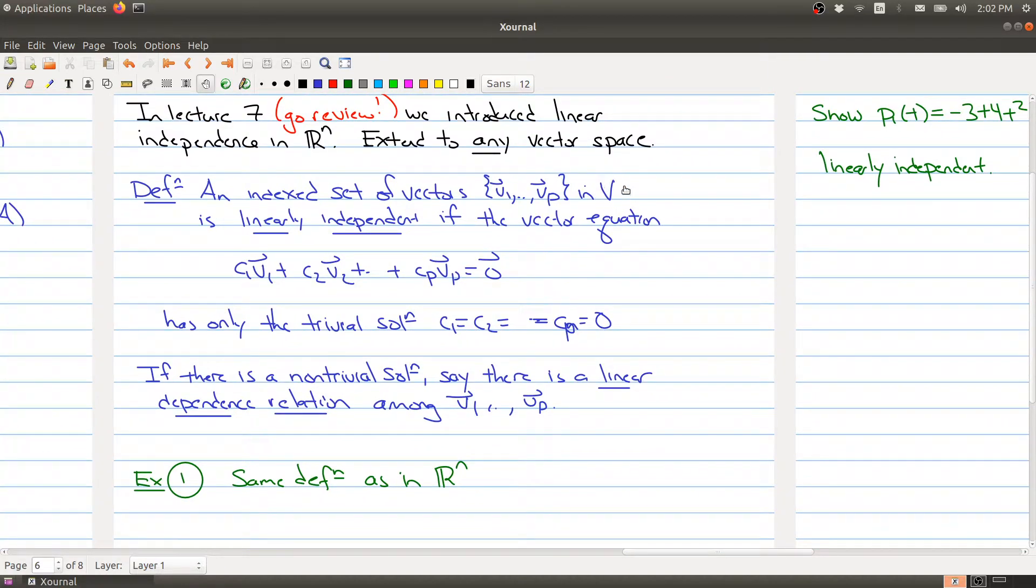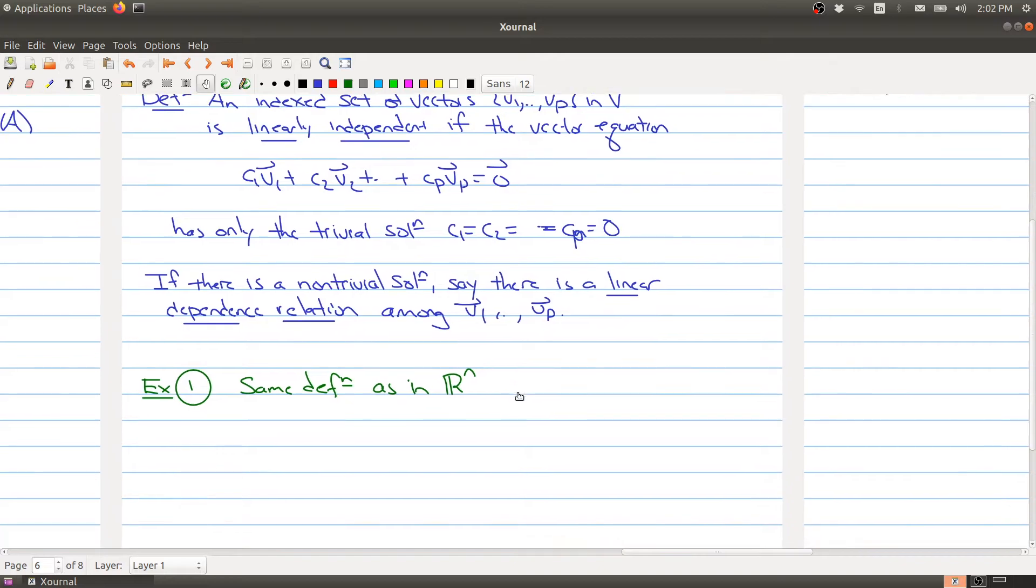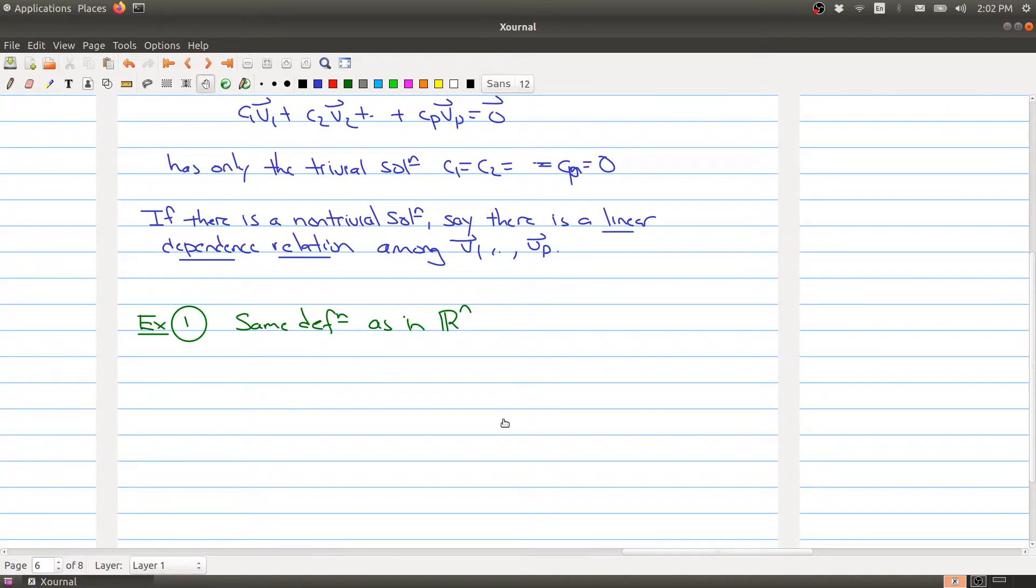this definition here just generalizes exactly the definition that we had in R^n. If you were to go back, this V here would just be R^n. This is the same definition in R^n. So all of those examples of things that were linearly independent in R^n are still linearly independent using this new definition. So in particular, the standard basis vectors E_1 through E_n are linearly independent.